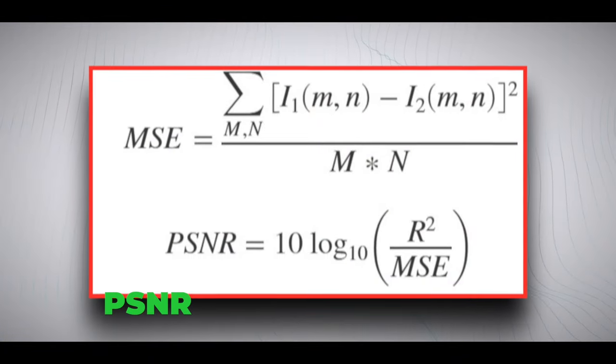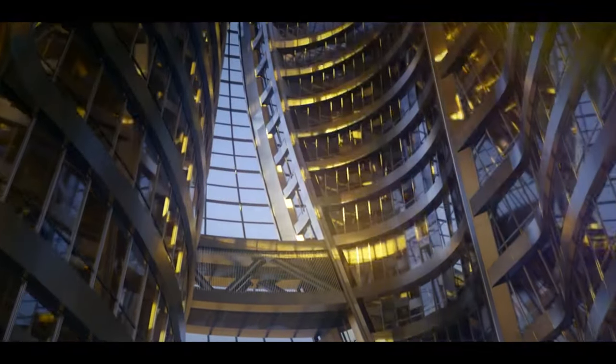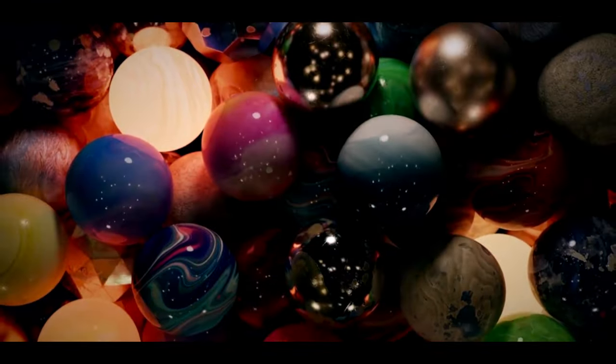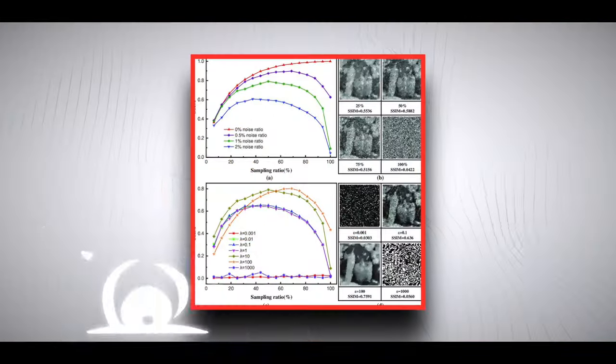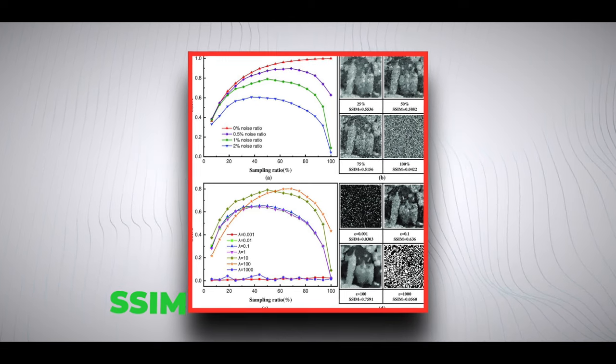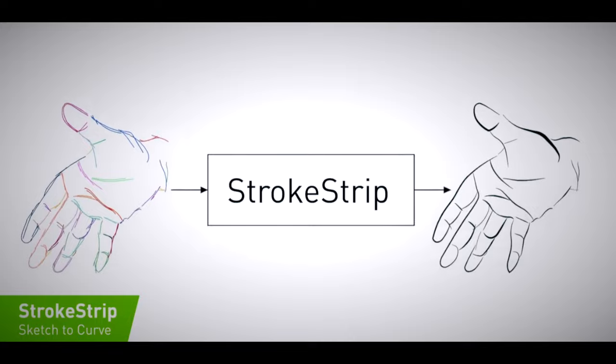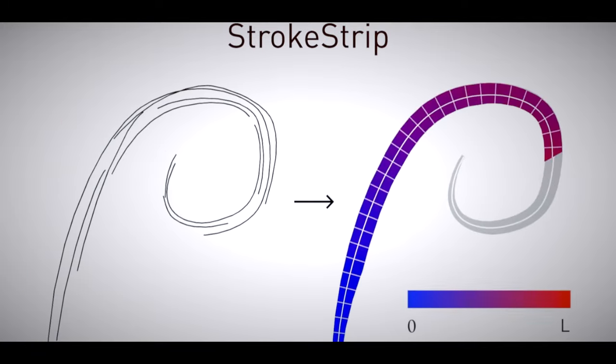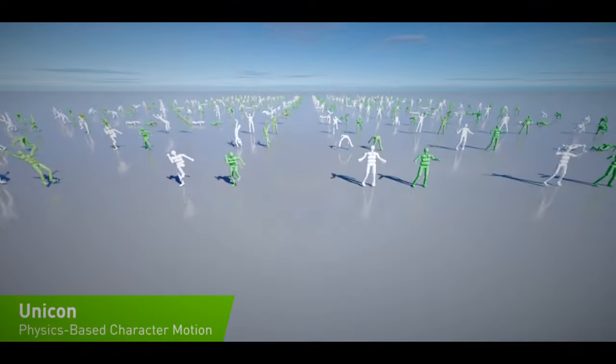Next up is PSNR. This one checks how clear and sharp the computer-made shapes are compared to the real ones. It's like looking at your toy through a really good magnifying glass and making sure all the details are just right. SSIM also looks at the quality of the computer-made shapes, mostly when it comes to things like colors and shading. It's like checking if your toy's colors are just as vibrant and its shadows are just as cool as the real thing.